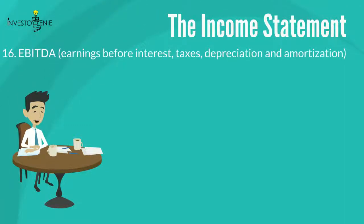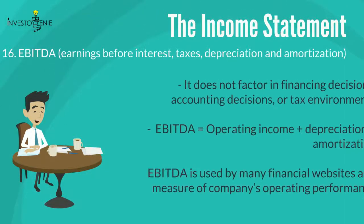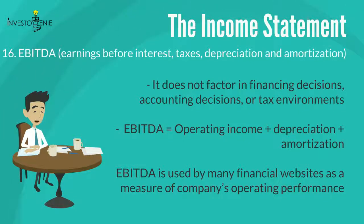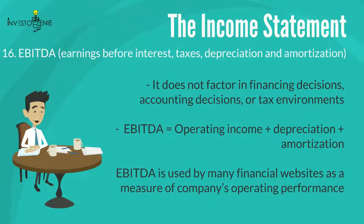Sixteen: EBITDA — earnings before interest, tax, depreciation, and amortization — is a measure of a company's operating performance. It does not factor in financing decisions, accounting decisions, or tax environments. In some accounting principles it can also be calculated by adding operating income and depreciation and amortization. EBITDA is used by many financial websites as a measure of a company's operating performance.